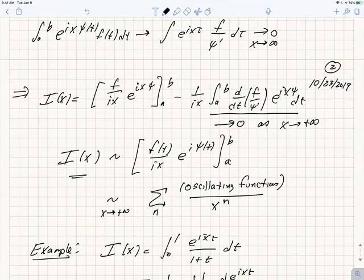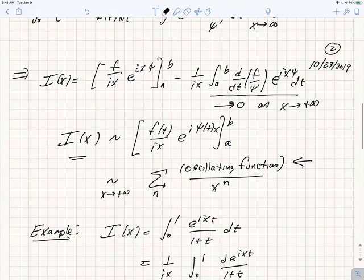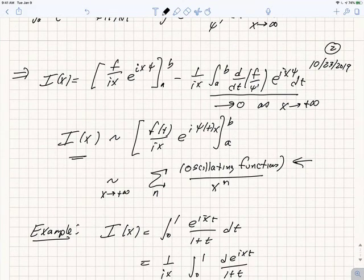and what we find is in general that the function i of x is asymptotic to f of t over i x e to the i psi of t times x evaluated, sorry there's an x here, evaluated at b minus its value at a, and then if we integrate by parts more times we're going to get a general sum, which is a sum of oscillating functions divided by x to the n.